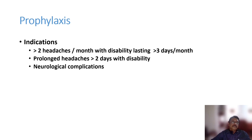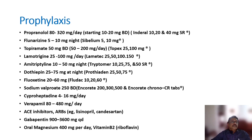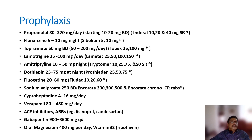Prophylaxis is indicated when a patient has more than two headaches per month with disability lasting more than three days per month, prolonged headache lasting more than two days, or neurological complications. Commonly used prophylactic drugs include propranolol (beta-blocker) and flunarizine. Other options include topiramate, lamotrigine, amitriptyline, dothiepin, fluoxetine, sodium valproate, cyproheptadine, verapamil, ACE inhibitors, gabapentin, and oral magnesium.